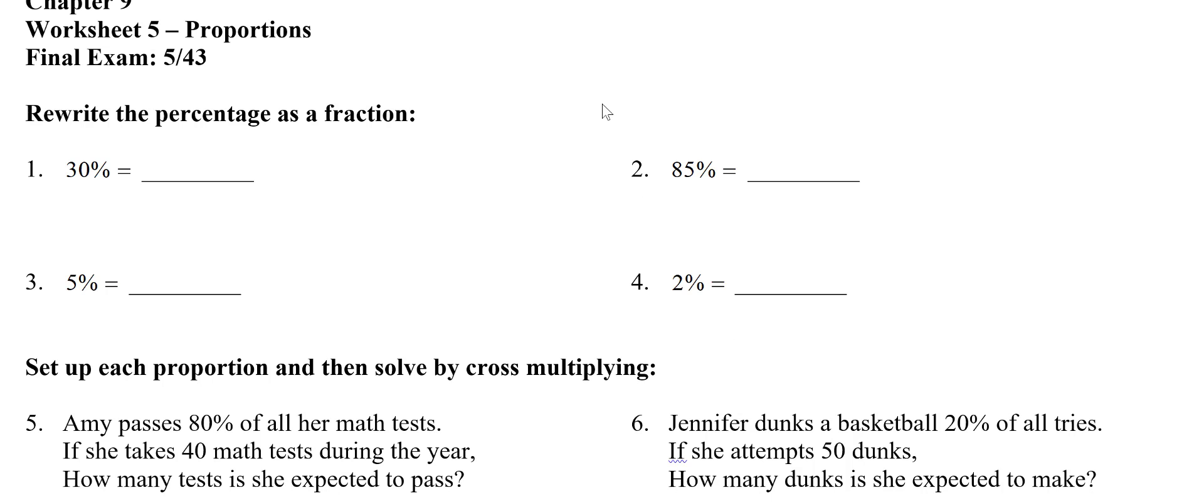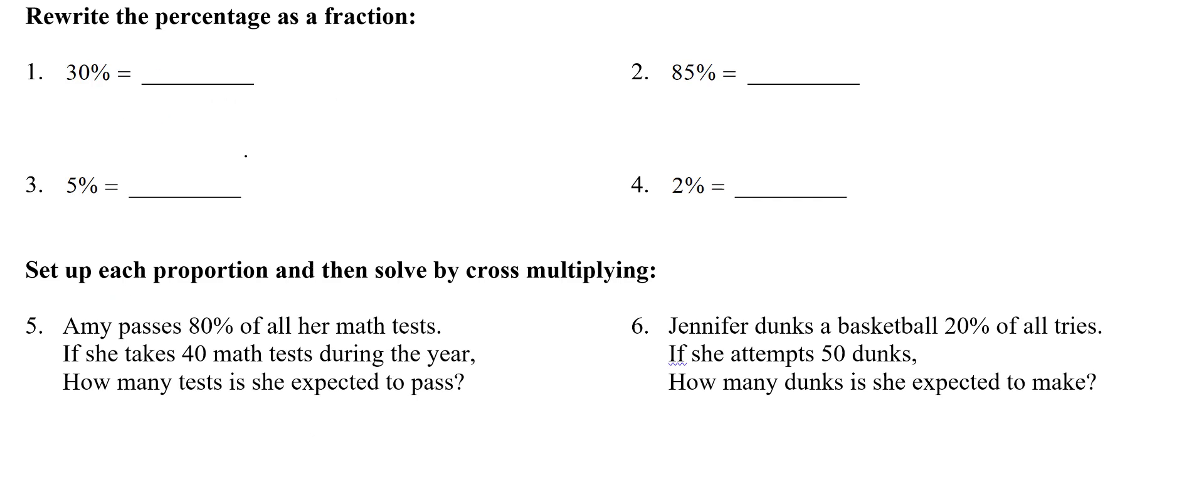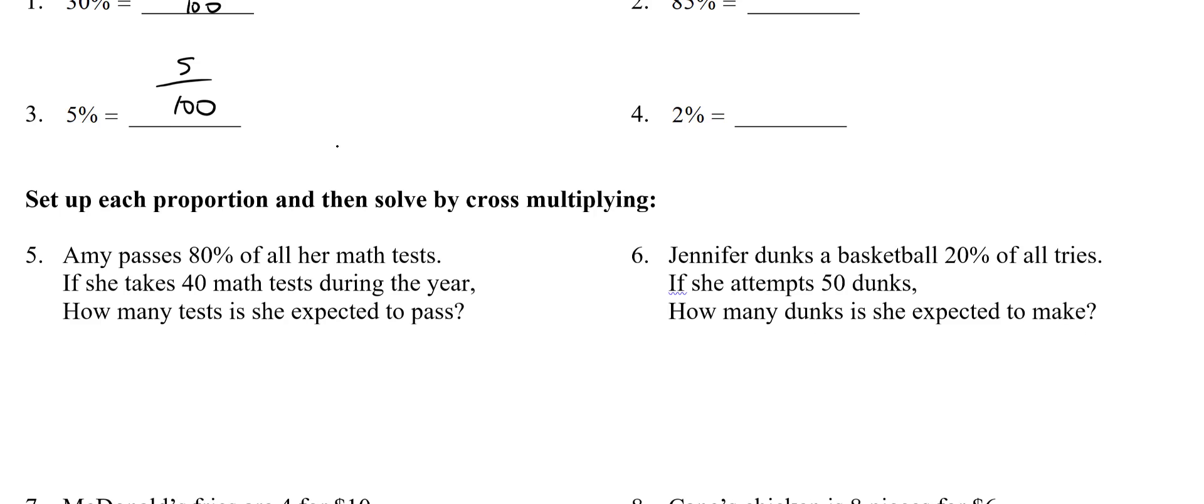First of all, if I ask you to write a percentage as a fraction, it's really easy. Remember when I did is over of equals percent over 100? It's percent over 100. So literally, 30% is 30 over 100. That's how you write a percentage as a fraction. Five percent is 5 over 100. Pretty easy. Always over 100.